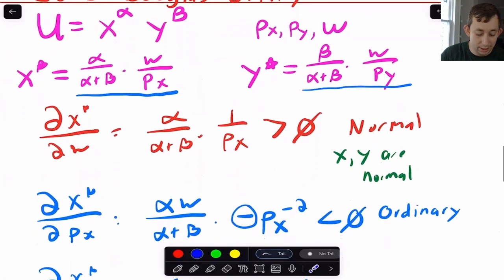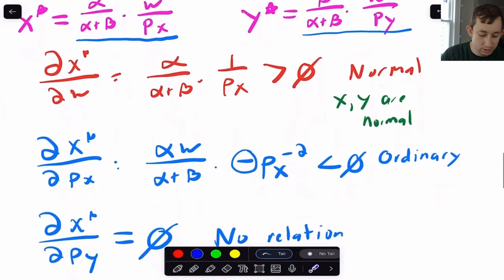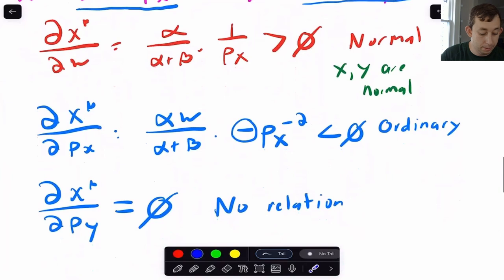But if I jump into, say, the income elasticity of demand for x star, then what I'm going to say is, well, this is w, and so I'm just going to take the partial derivative. Notice that everything here is positive, so we're definitely dealing with a normal good. And again, if you're struggling with some of these partial derivatives, please leave a comment below.